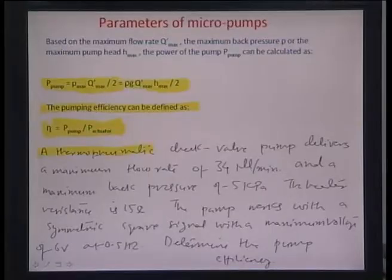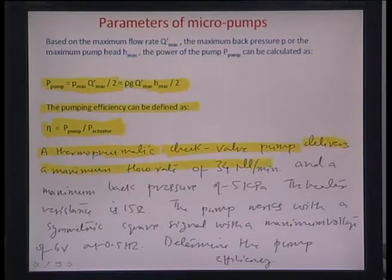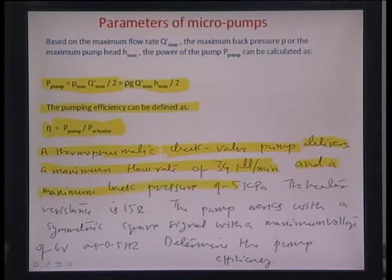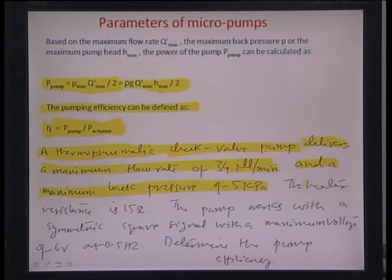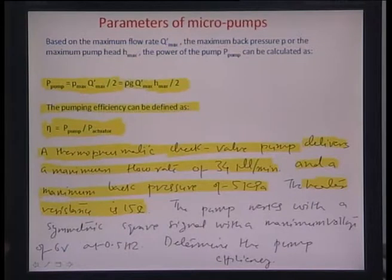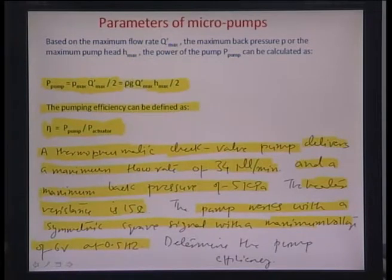Here is an example: a thermopneumatic check valve pump delivers a maximum flow rate of 34 microliters per minute with a maximum back pressure of 5 kPa. Because it is thermopneumatic, the fluid is heated. The heater resistor is about 15 ohms and the pump operates with a symmetric square signal with a maximum voltage of 6 volts at 0.5 Hz. Determine the pump efficiency.